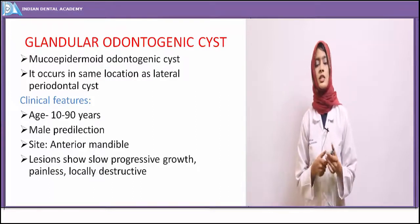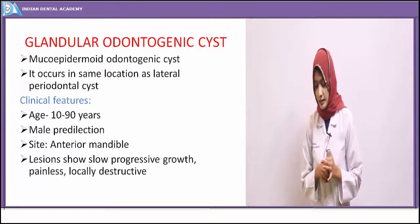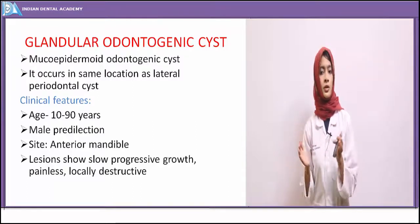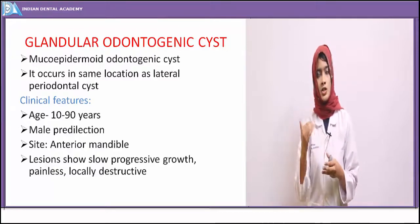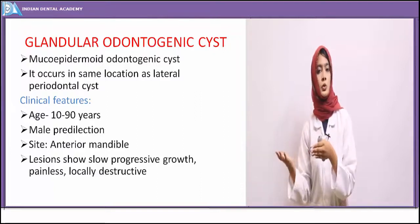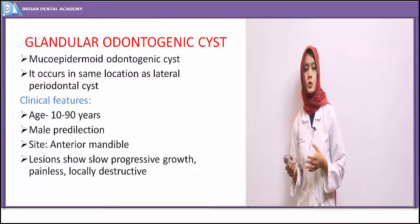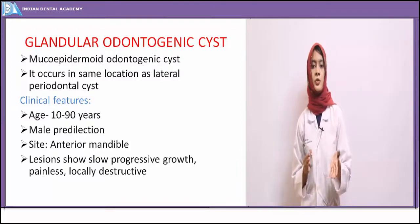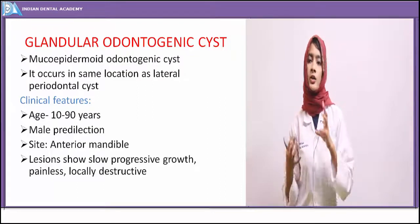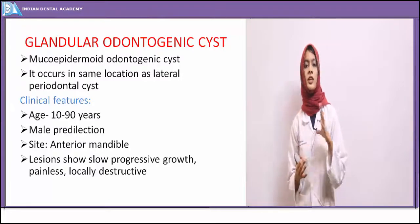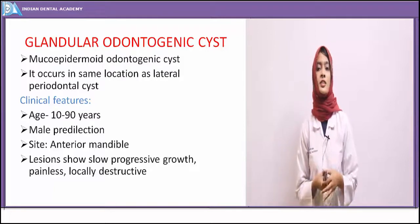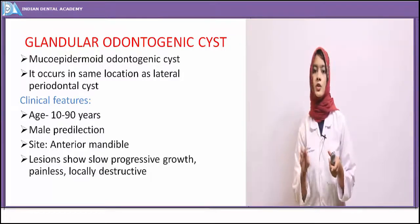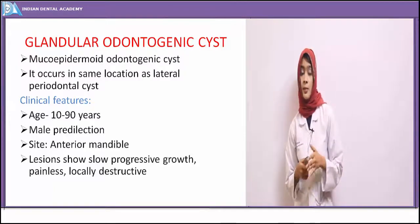Treatment is enucleation with curettage. Another important histologic feature is dentinoid — an irregular calcified mass of tissue — relating this cyst to ameloblastoma. Ghost cells and dentinoid are the two characteristic features of the calcifying odontogenic cyst. The solid variant, dentinogenic ghost cell tumor, has similarities but lacks the cystic cavity and epithelial lining seen in the cystic variant.